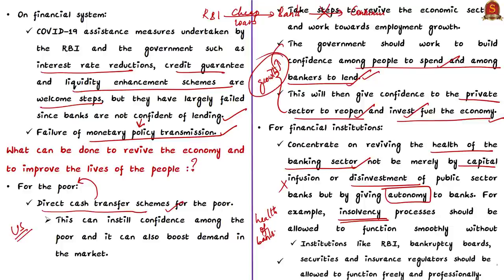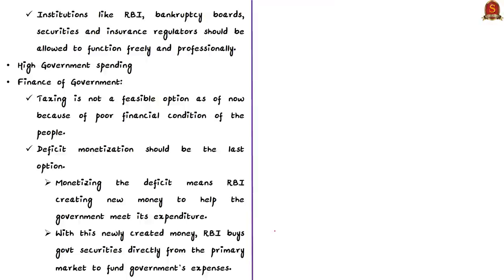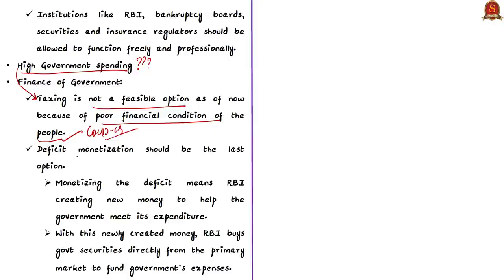Regarding government spending, large amounts of money are needed to fund increased expenditure to revive the economy — for example, direct cash assistance and improving capital adequacy of banks. Generally, when the government needs money, it turns to taxation, but in the current context taxation is not feasible due to the poor financial condition of people. The much-discussed option is monetization of deficit, which means RBI creating new money — effectively printing more money — to help the government meet its expenditure, by buying treasury bills and giving money to the government. The authors say deficit monetization should be the last option.